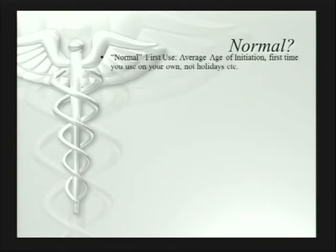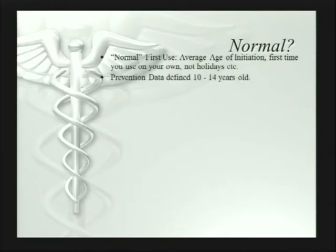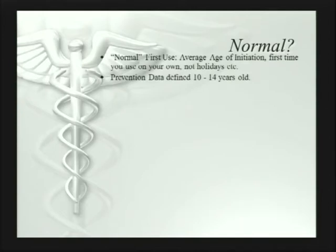The first use — technically what we call the age of initiation — is basically the first time you use on your own, not at holidays or football games; the first time you consciously use on your own. The prevention data define the age of initiation as between 10 to 14 years old historically. The age of initiation has been around 10 for quite some time — going on decades. So that's the normal first use — around age 10.